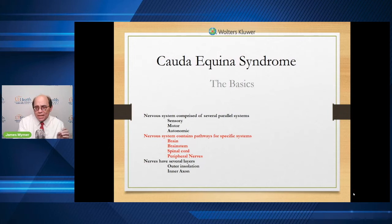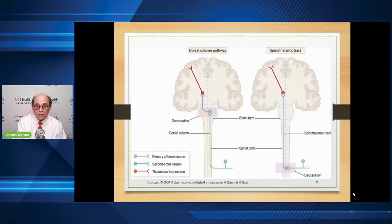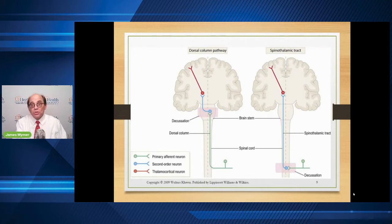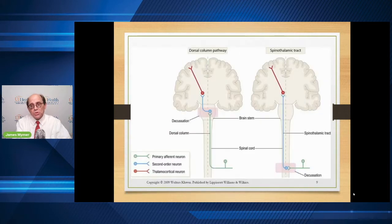Extending that further: within each of the sensory, motor, and autonomic systems, they each have their own specific components. They start in the brain, go to the brain stem, down to the spinal cord, and down to the peripheral nerves. This diagram shows the sensory system: the red is the brain component, the blue going through the spinal cord, and green going out to the periphery. As a result, we'll talk about what are referred to as upper nerves — the nerves within the brain — or lower nerves, which are the nerves outside of the brain.